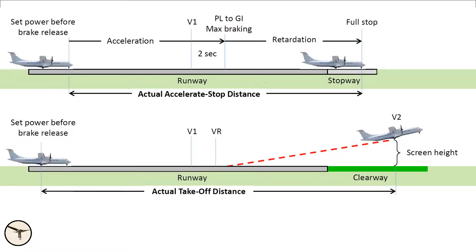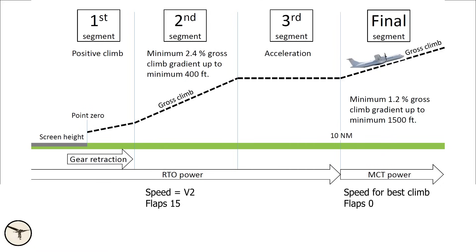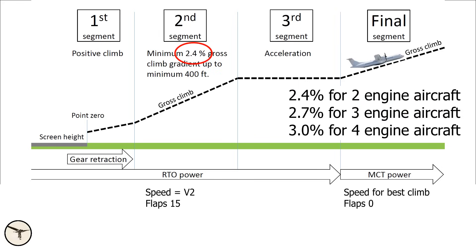Let's return to the rulebook. If the critical engine fails at V1, the aircraft must be able to continue the take-off and climb at V2 speed. In this scenario, the landing gear is retracted, the flaps remain in the take-off position, the propeller of the failed engine is feathered, and the operating engine delivers maximum available power. For twin-engine aircraft, the required minimum climb gradient is 2.4%. This requirement increases slightly for aircraft with 3 or 4 engines.